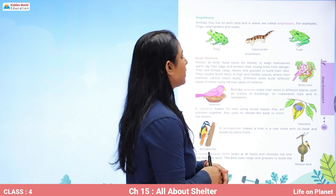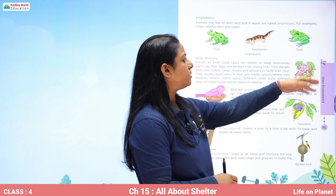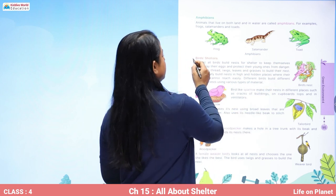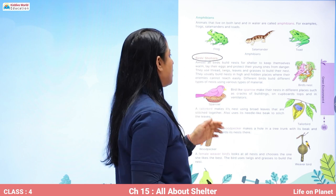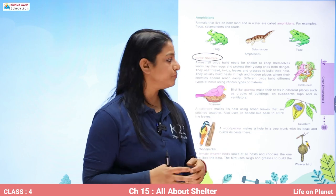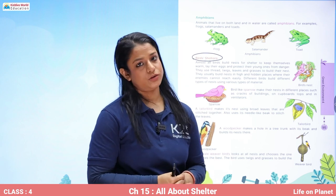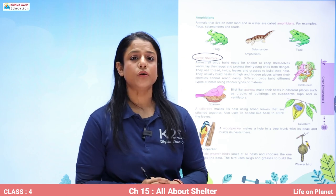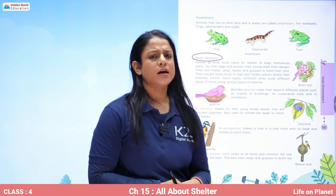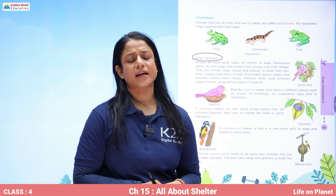Amphibians are animals which can live both on land and in water — for example, frog, salamander, and toad. Almost all birds build their nests for shelter to keep themselves warm, to lay eggs, and to protect their young ones from danger. Birds build their nests to rest, to feed their young ones, and to keep them away from their enemies.